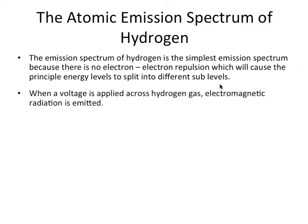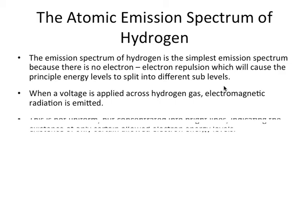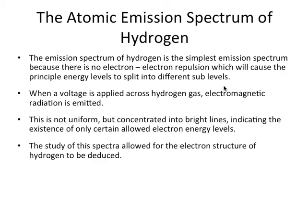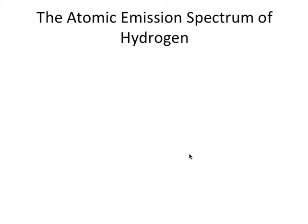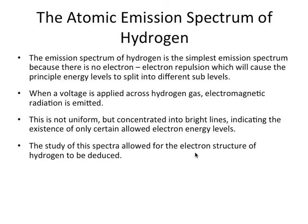Hydrogen has the simplest emission spectrum because of that one electron. There's no repulsive forces from other electrons that are going to cause those principal energy levels to split into those different sub-levels. The fact at this point that you only have those discrete lines indicates that the existence of only allowable electron energy levels. And the study of that spectra allowed for the electron structure of hydrogen to be deduced.